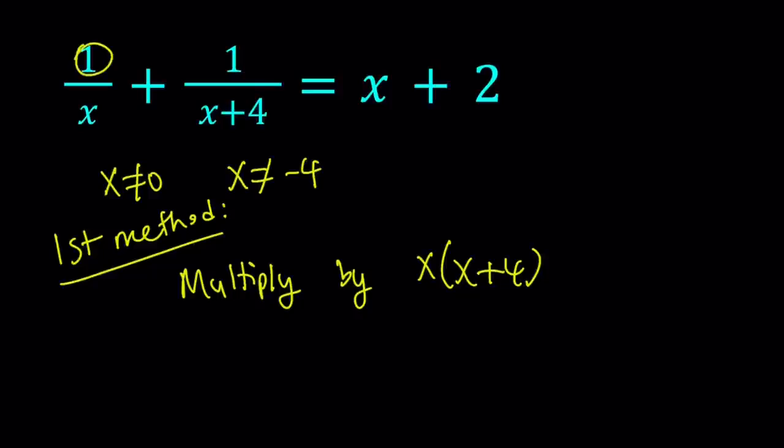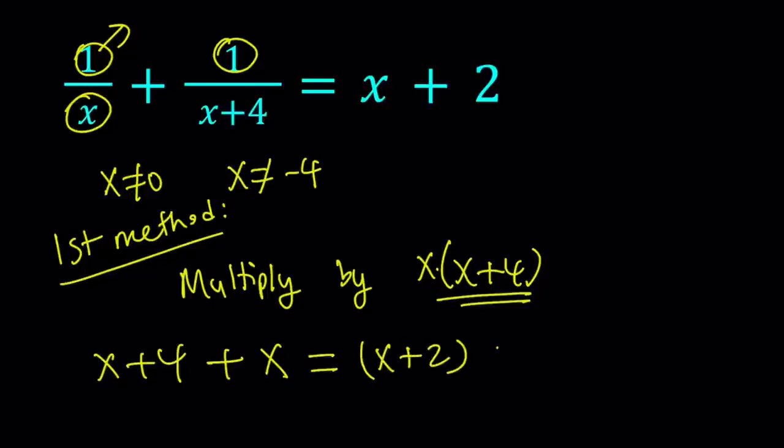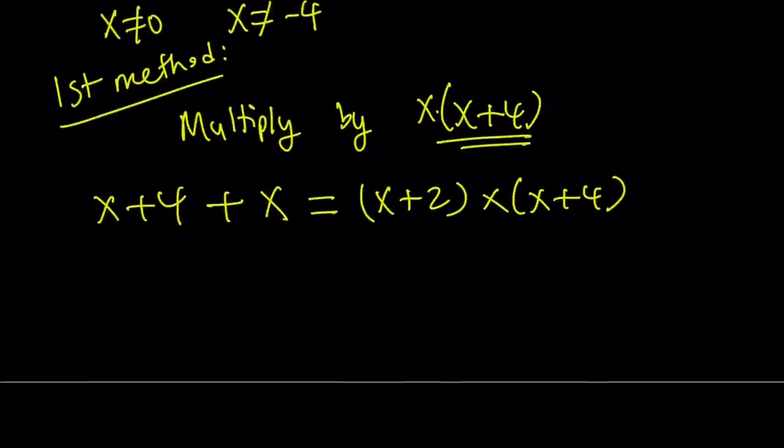When I multiply this by x times x plus 4, x is going to cancel out. So I get x plus 4 in this one, and this one is going to give me x because x plus 4 is going to cancel out. And then when you multiply the right hand side, you're going to have x plus 2 times x times x plus 4. So that's going to give us a cubic equation. Let's see how we can solve it.